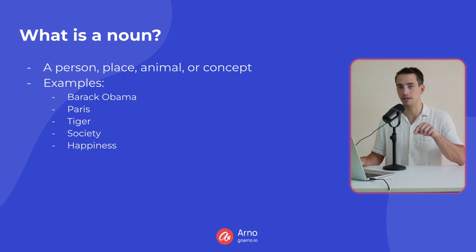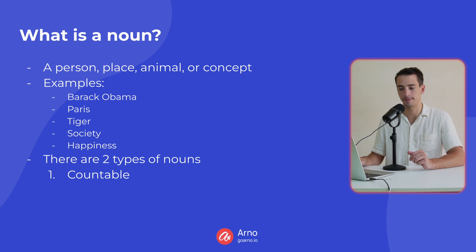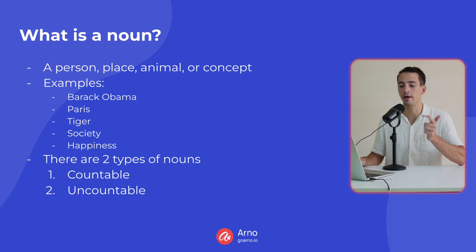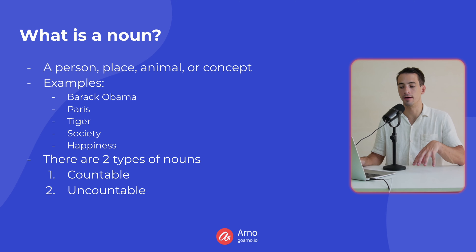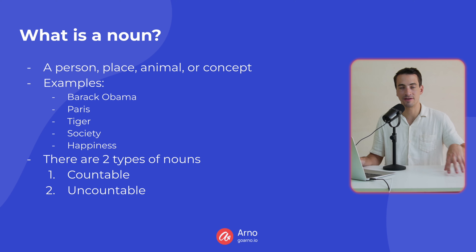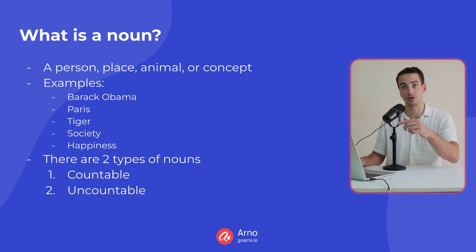Every noun that you see in English will fall into one of two categories. It will either be countable or it will be uncountable. It's important to know which category a noun belongs to because that will determine the specific grammar that you need to use with it, which I'm going to explain next.